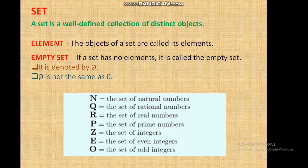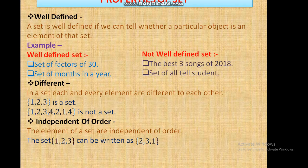Properties of sets: Well-defined – A set is well-defined if we can tell whether a particular object is an element of that set. For example, the set of factors of 30 is a well-defined set. The set of months in a year is a well-defined set.